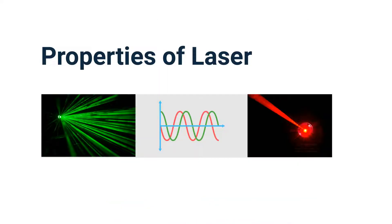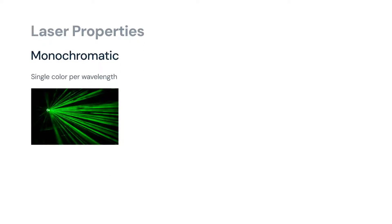The first property of lasers is monochromaticity, which means light that consists of a single wavelength or color — one color per wavelength. For example, if 532 nanometers is green, it stays green.